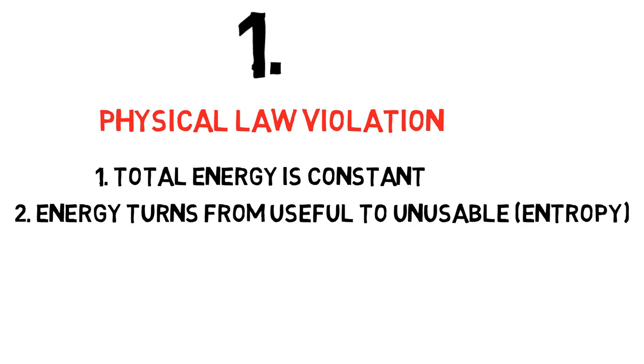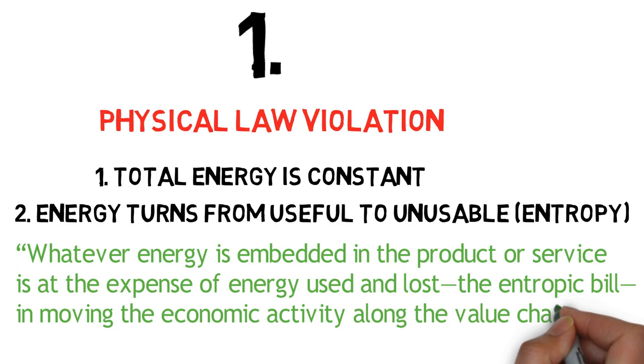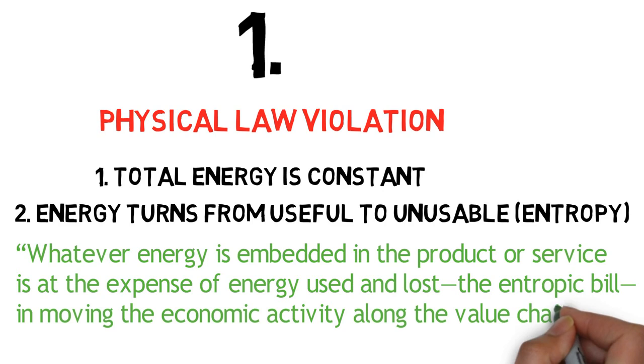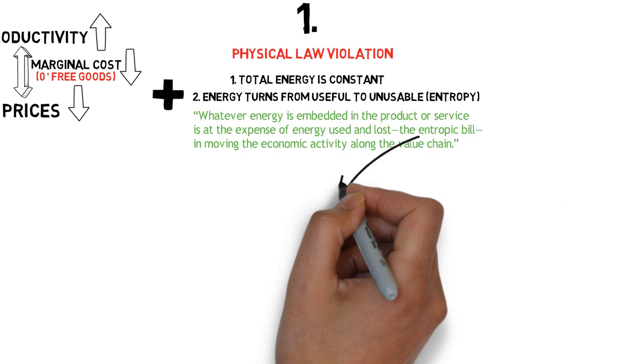Quoting the author: whatever energy is embedded in the product or service is at the expense of energy used and lost—the entropic bill—in moving the economic activity along the value chain. And the entropic bill for the last 200 years of ruthless economic activity has arrived. So what does it look like?